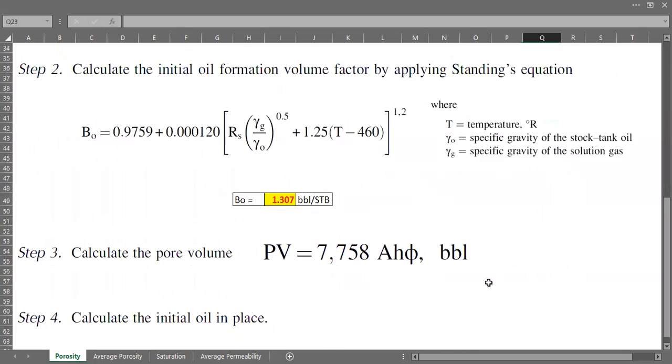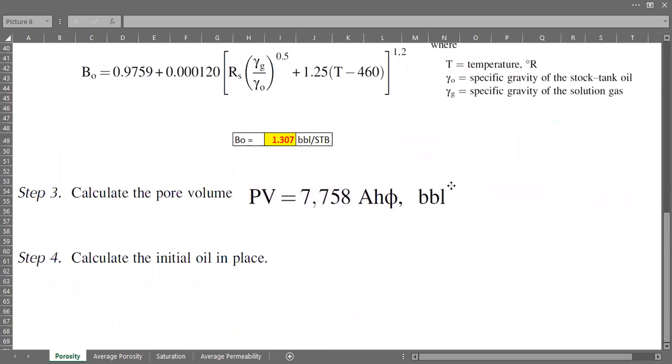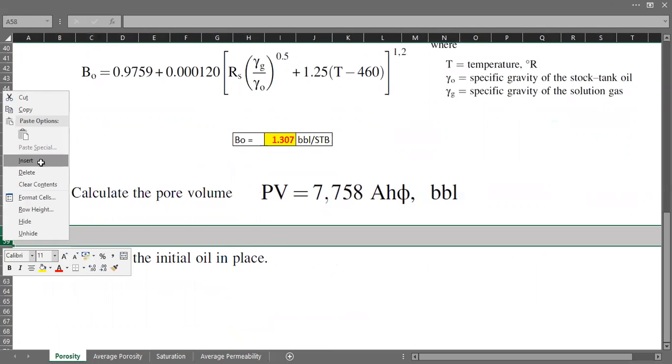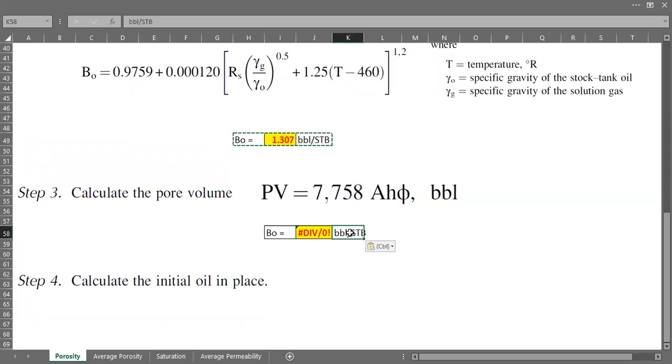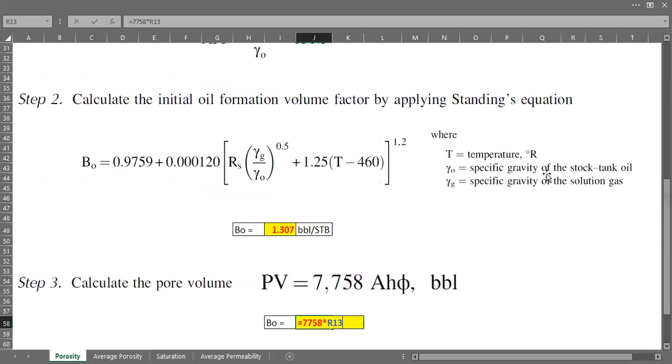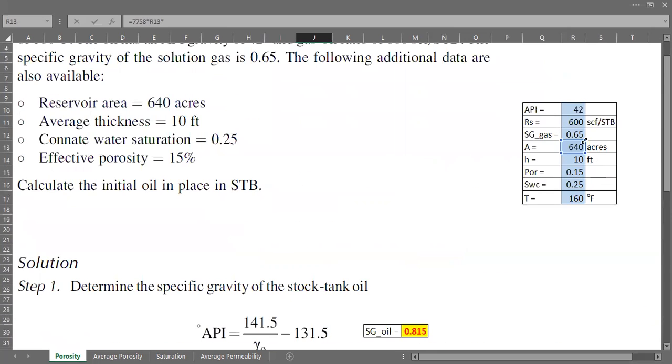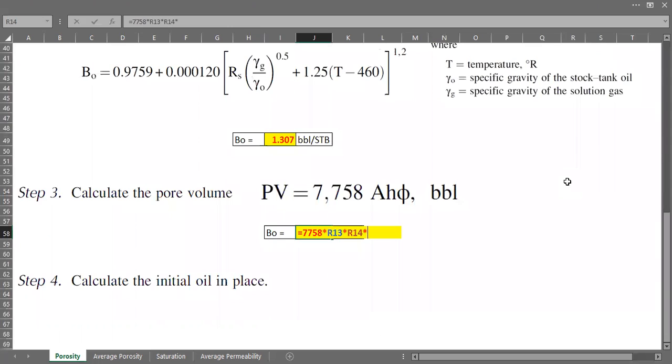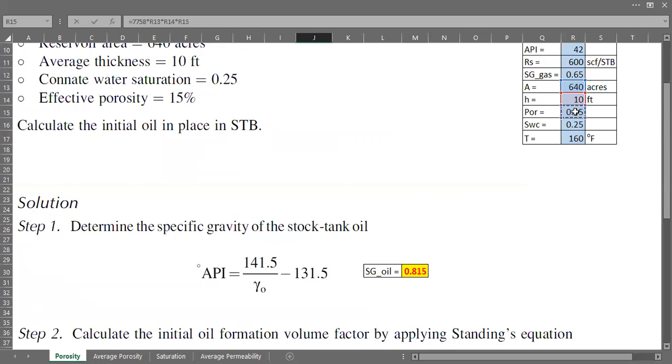To calculate the pore volume you can use this one and the result will be in barrel. So it's 7758 multiplied by the area of the reservoir, this one, 640 acres, and then average thickness of 10 feet, and then this one multiplied by effective porosity. You can use effective porosity to get the porosity that is contributing to the oil production.